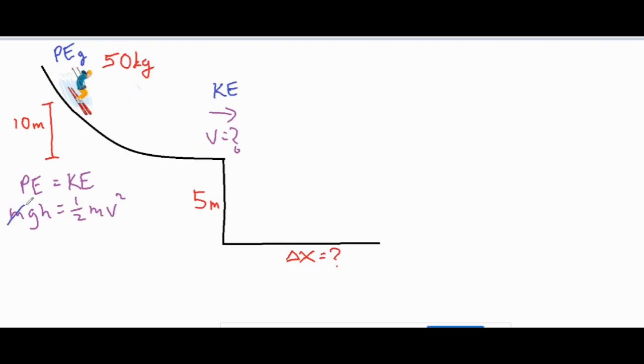The mass is actually insignificant and cancels out on each side. After we set those two formulas equal to each other, we have 9.8 times 10 equals one half V squared. 9.8 times 10 is 98, times 2 is 196. We multiply by 2 to cancel the one half, then square root both sides, giving us a velocity of 14 meters per second.